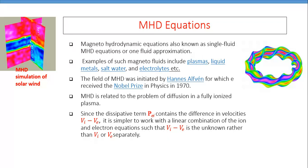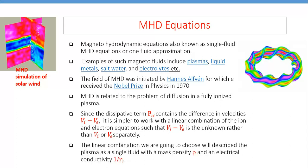If we speak about the electron-proton plasma, then the friction term B_ei is proportional to V_ei minus V_e, which is simply the linear combination of the ion and electron fluid velocities. It means that instead of the individual electron or proton velocities separately, we can have a linear combination of the ion and electron velocities such as V_ei minus V_e, rather than the individual velocities V_ei or V_e separately. The MHD equations obtained at the end will show a linear combination representing plasma as a single fluid with a mass density rho and electrical conductivity 1 over eta.